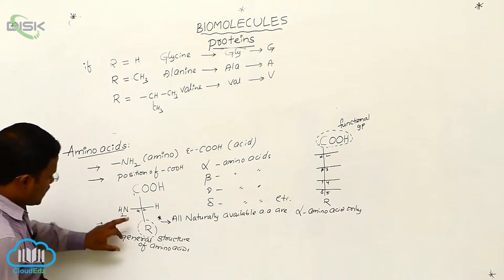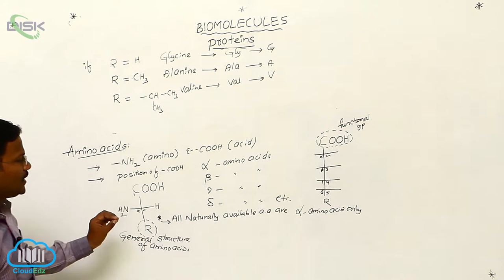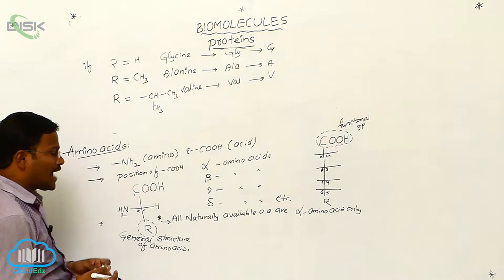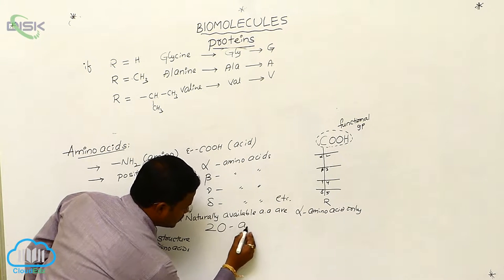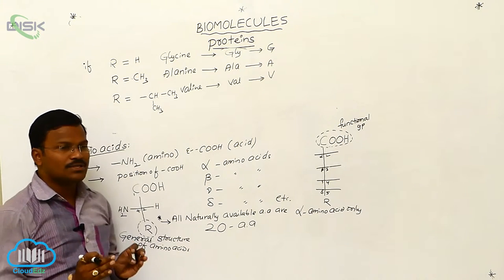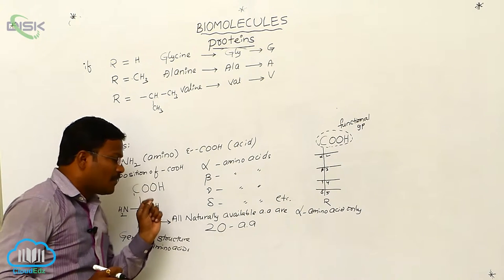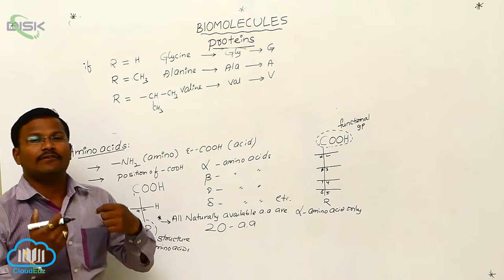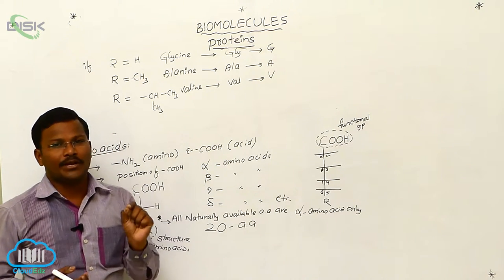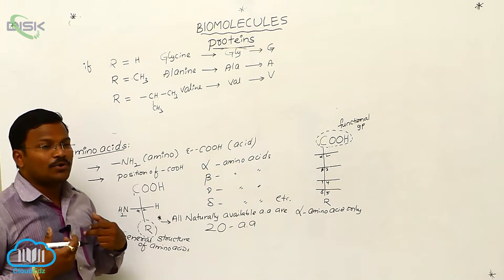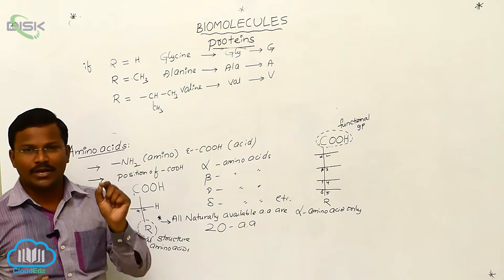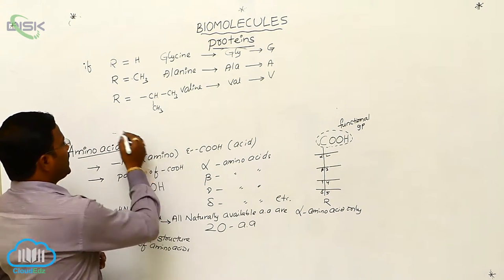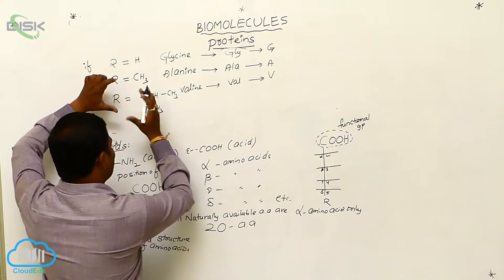By substituting different alkyl groups or other groups in place of R, it is possible to produce different amino acids. There are 20 naturally available amino acids in total. All 20 are biosynthesized in plant bodies, but only some are biosynthesized in the human body. Those biosynthesized in the living organism are called non-essential amino acids, while those that cannot be biosynthesized by our body are called essential amino acids, which must be taken through diet.